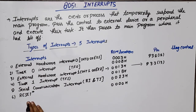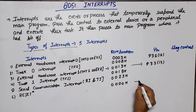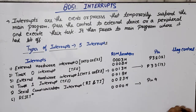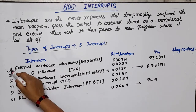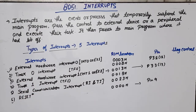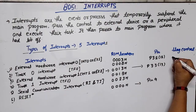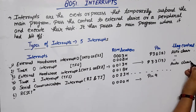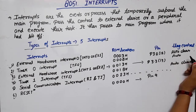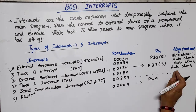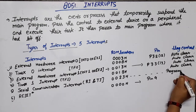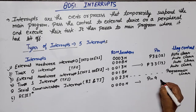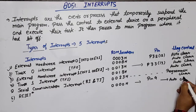Regarding flag control: for all 5 interrupts — External 0, Timer 0, External 1, Timer 1, and Reset — the flags are auto-cleared when the ISR executes. However, in the case of the Serial Communication Interrupt, the flag must be cleared by the programmer — it is not auto-cleared. For Reset, it is auto-cleared.